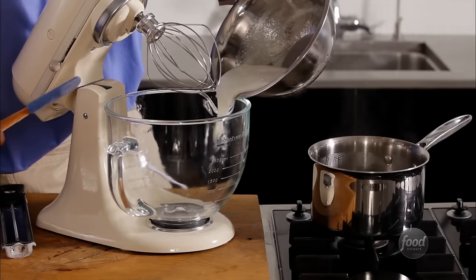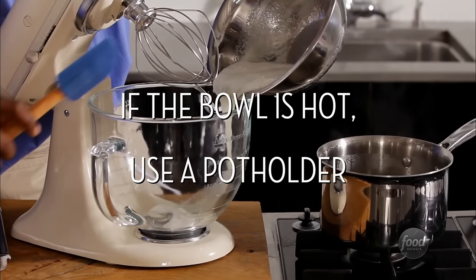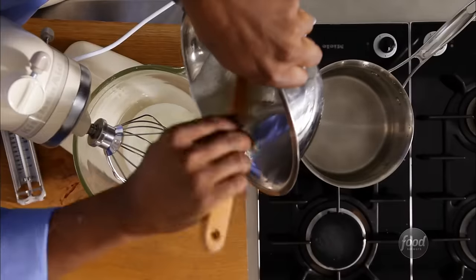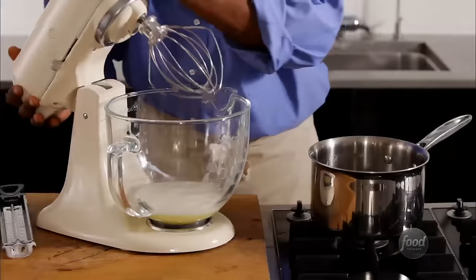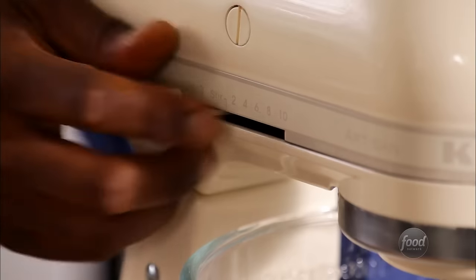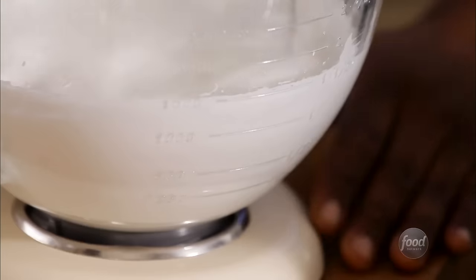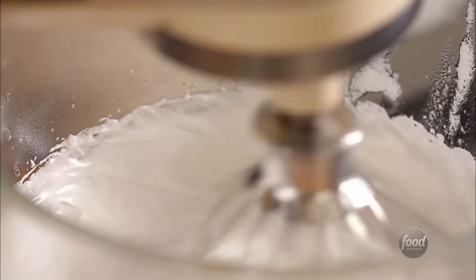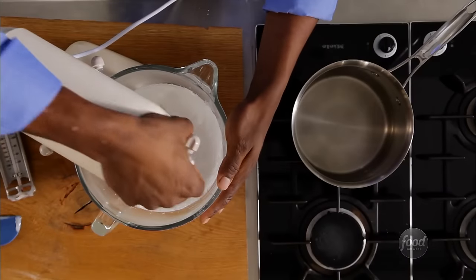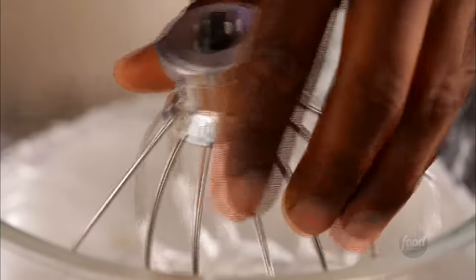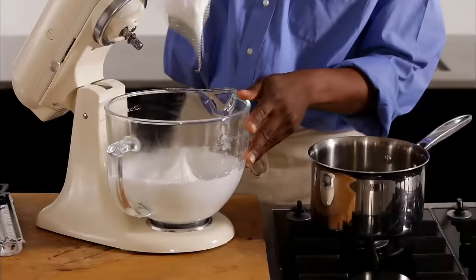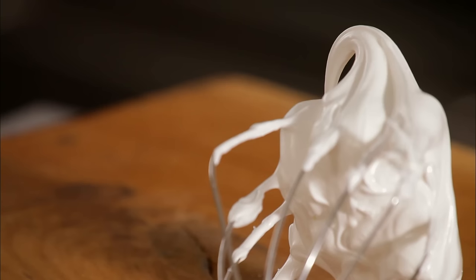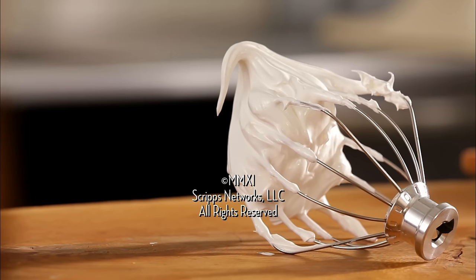Once it's hot it goes into the mixer. You want it to be foamy and thick when you're done mixing. You'll also notice that as it thickens the bowl will get cooler. Whip until you get stiff peaks that should stand up on the end of the whisk, and your desserts will receive a standing ovation.